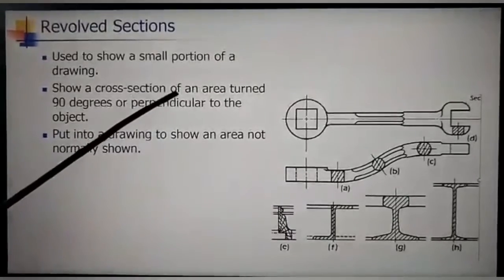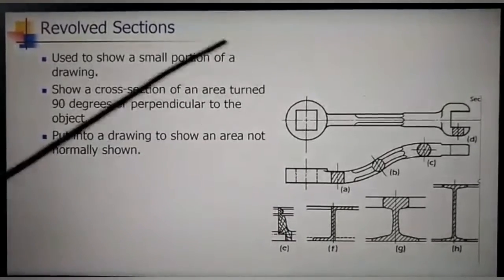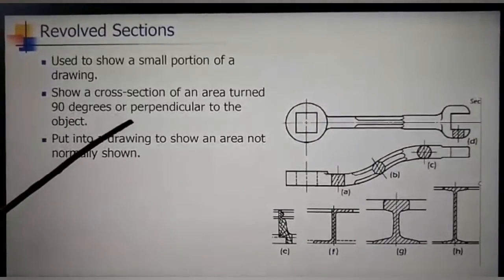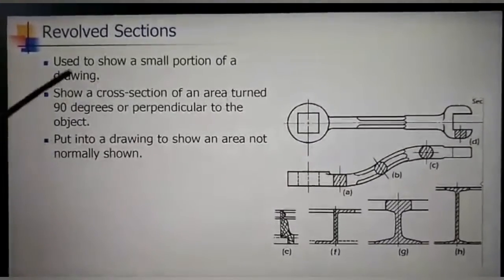A cross section of an area turned 90 degrees or perpendicular to the object.